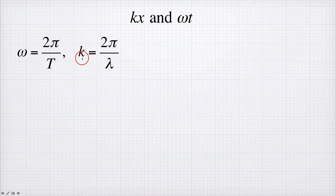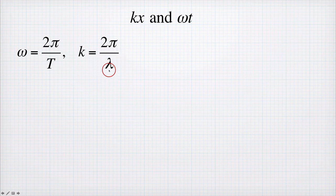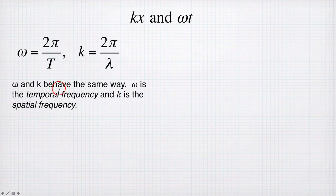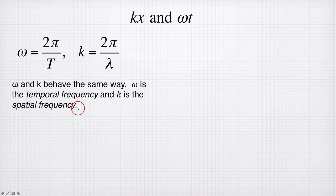And k is the angular spatial frequency, so it's 2π divided by the period of the wave in space, which is the wavelength. So they behave the same way because they're constructed in the same way. Omega is the temporal frequency and k is the spatial frequency, both given in radians.